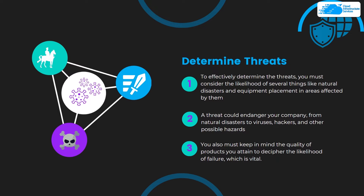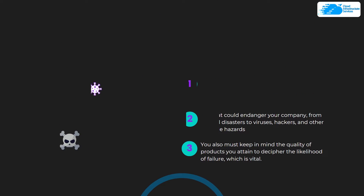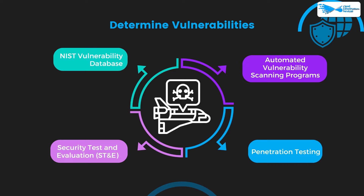Once you have done that, you can move on to step number three: determining the vulnerabilities. A vulnerability is a flaw that could allow danger to hurt your business. Software flaws can be found using audit reports. You can use the NIST vulnerability database, information security test and evaluation methods such as ST&E, penetration testing, automated testing, or automated vulnerability scanning programs available on the internet.